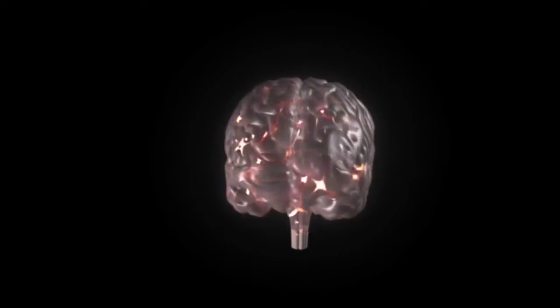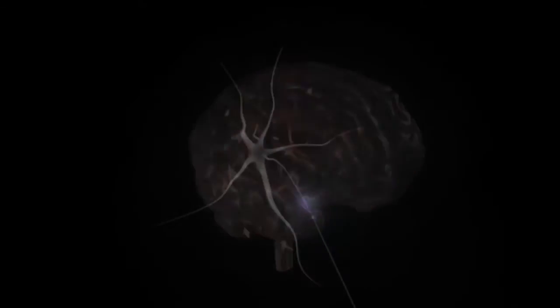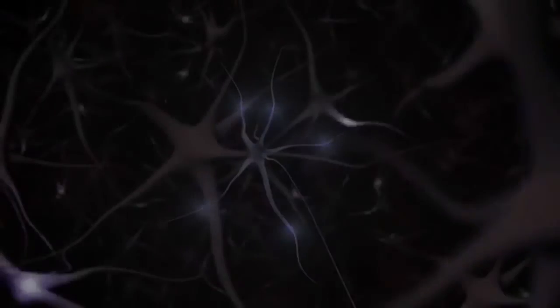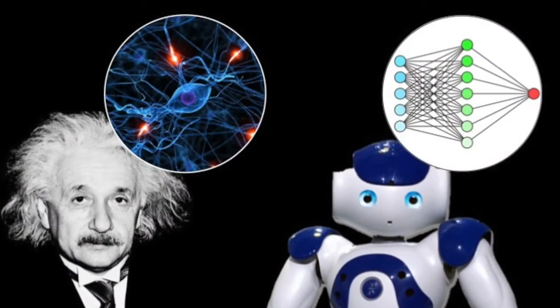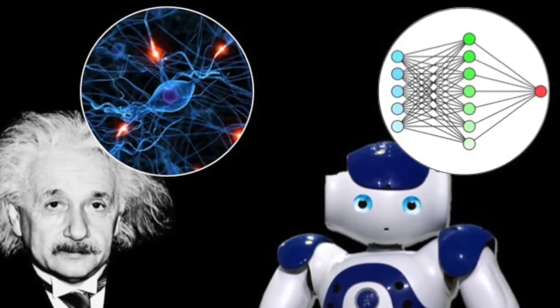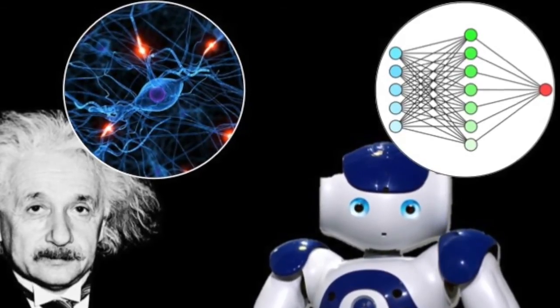Our brain is made up of a network of neurons that fire in complex ways to produce our ability to think. Artificial intelligence researchers try to create intelligent robots by making simulations of our brains called artificial neural networks.